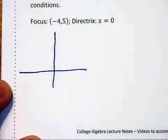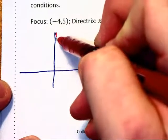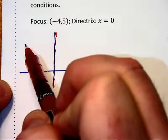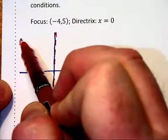The directrix is x equals zero. That is the y-axis here. And I see that at negative four comma five, I'm going to have the focus.